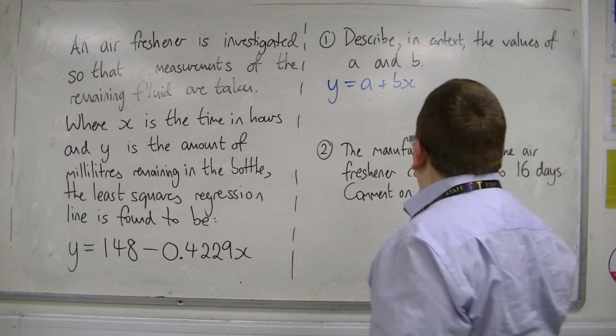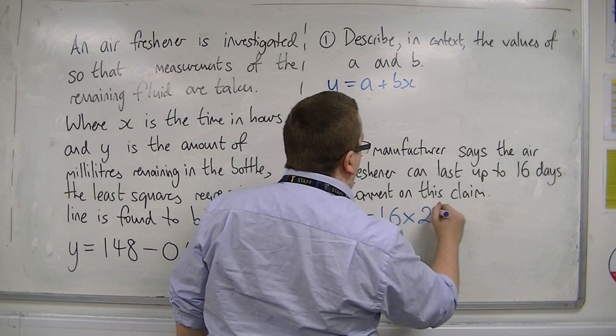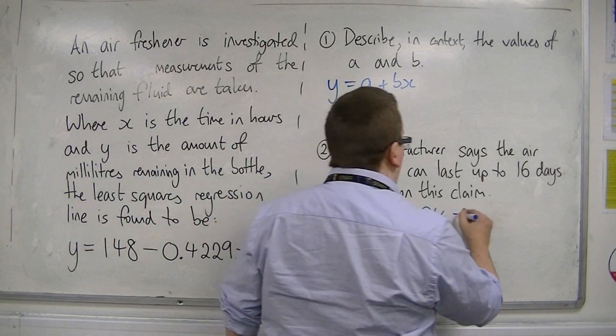So we need to find x = 16 × 24, 24 hours in a day. So 16 × 24 is 384. So this is the value that I must substitute into the least squares regression line.